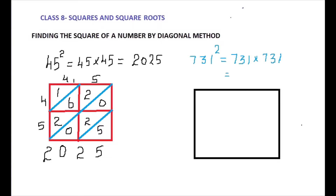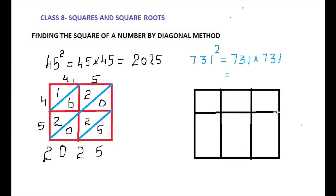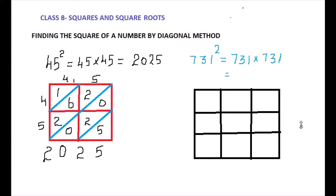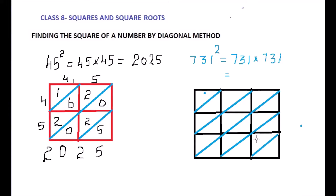For a 3-digit number, divide the square into three equal parts vertically and three equal parts horizontally, giving nine equal smaller squares. Then, just as before, divide each of the nine boxes diagonally. This creates diagonals: first diagonal, second diagonal, third diagonal above, fourth diagonal, and the last — giving five diagonals total, with one extra sixth position.